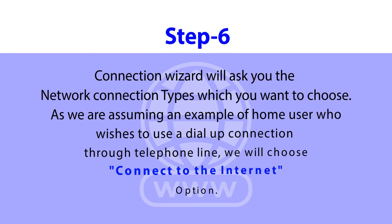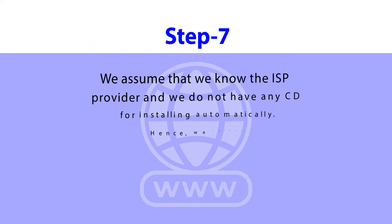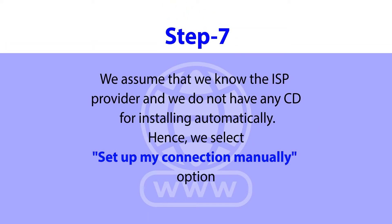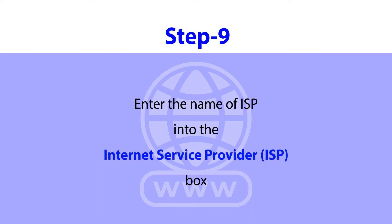Step 6: The connection wizard will ask you the network connection type you want to choose. As we are assuming a home user who wishes to use a dial-up connection through telephone line, we will choose 'Connect to the Internet' option. The next step: assuming we know the internet service provider and do not have a CD for automatic installation, we select 'Set up my connection manually.' Then we select the appropriate option indicating we are using a dial-up modem.